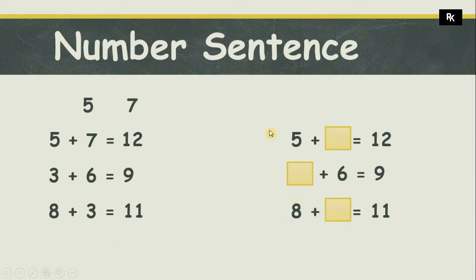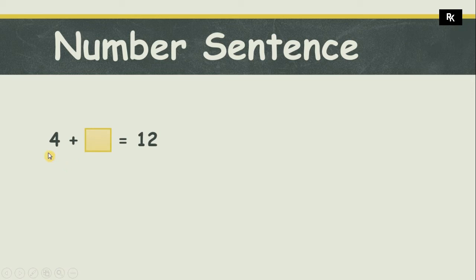In the first number sentence I removed seven, in the second one I removed three, and in the last one I removed three. This is a missing number sentence, and here I have to complete this number sentence. But how can we complete a missing number sentence?